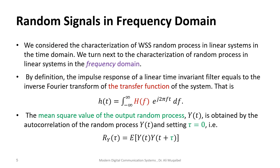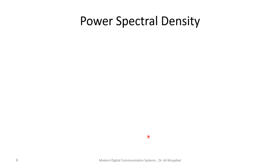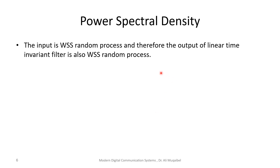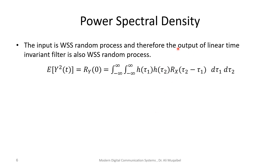Now that we've done the autocorrelation and the mean, we'd like to characterize the wide-sense stationary random process in the frequency domain. Just like the transfer function and impulse response are related by the Fourier transform, we're going to define something for the autocorrelation in the frequency domain. The mean square value of the output random process is obtained by setting τ = 0 in the autocorrelation.